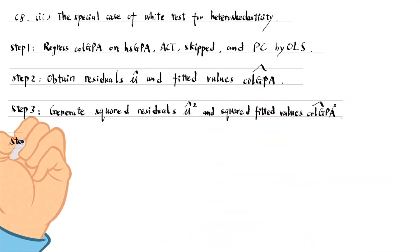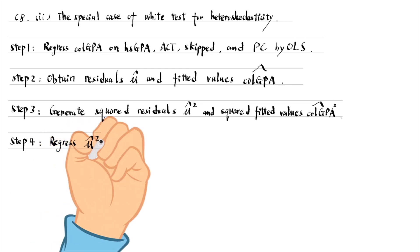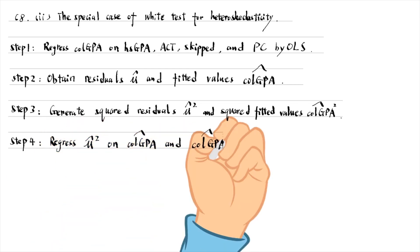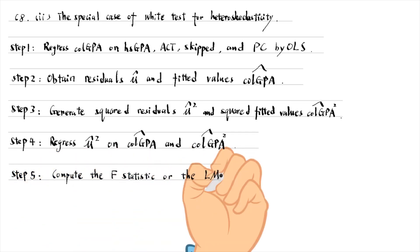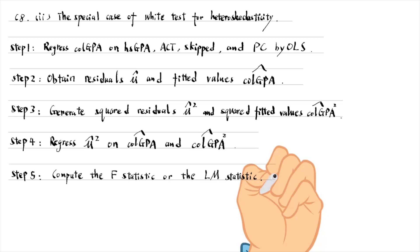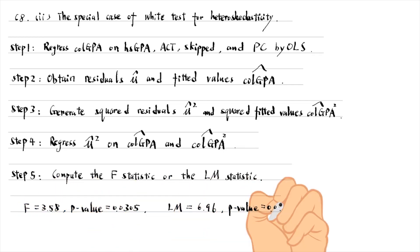After that, we regress the squared residuals on the fitted values and the square term. Finally, we can read the F statistic and its p-value in the Stata result window or compute the LM statistic. The F statistic is 3.58 and its p-value is 0.0305. The LM statistic is 6.96 and its p-value is 0.0308.